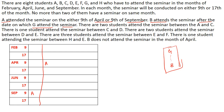The next clue: two students attend the seminar between A and C. So between A and C there is a gap of two students. If A is here, with a gap of two, C can be here. Or if C is here with a gap of two, A can be at this particular place — giving us two possibilities.